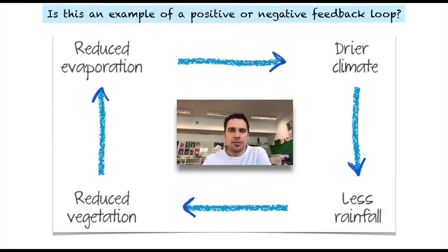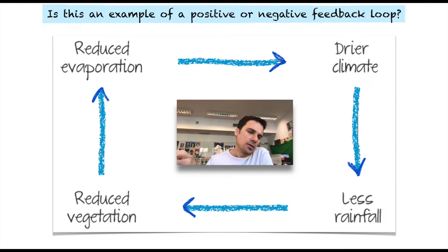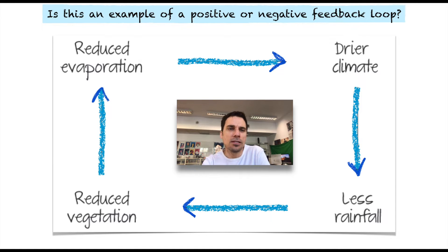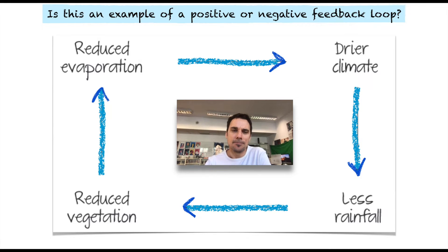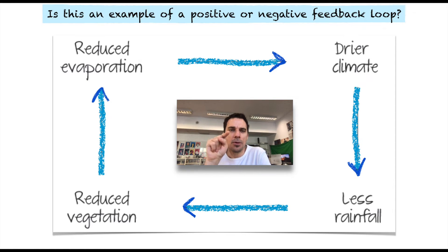Have a look at this and take two seconds to answer: is this positive or negative feedback? A drier climate leads to less rainfall, leads to reduced vegetation, leads to less evaporation, which leads to a drier climate, which leads to less rainfall, and so on. It sounds weird to say, but it's a positive feedback because as one variable goes up, the other implication goes up.